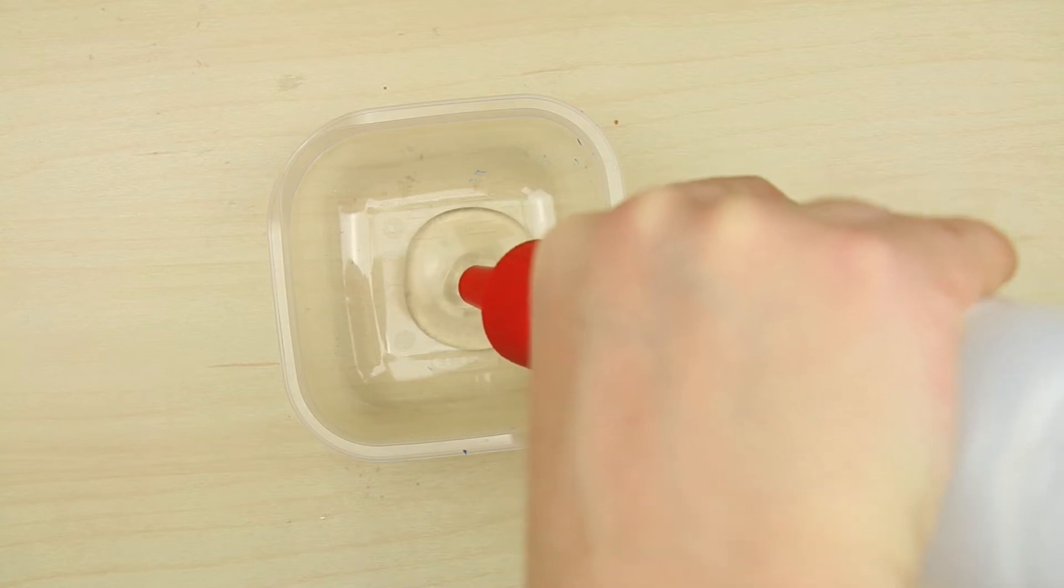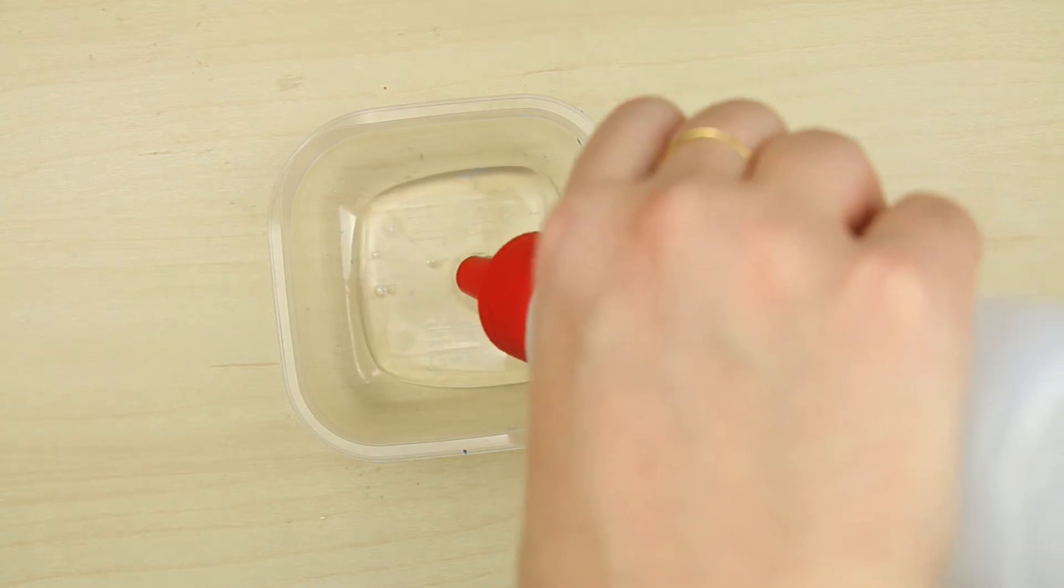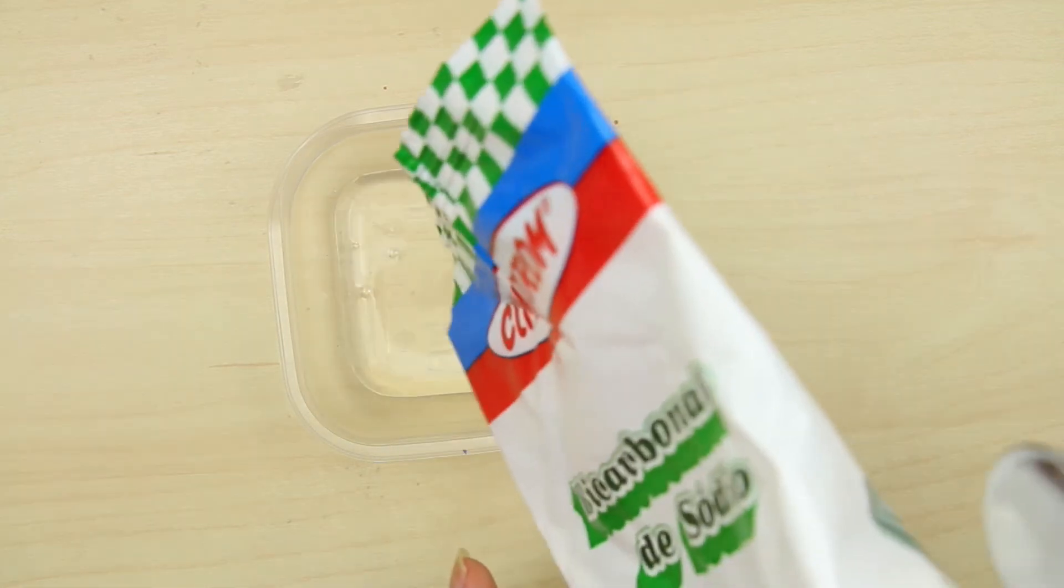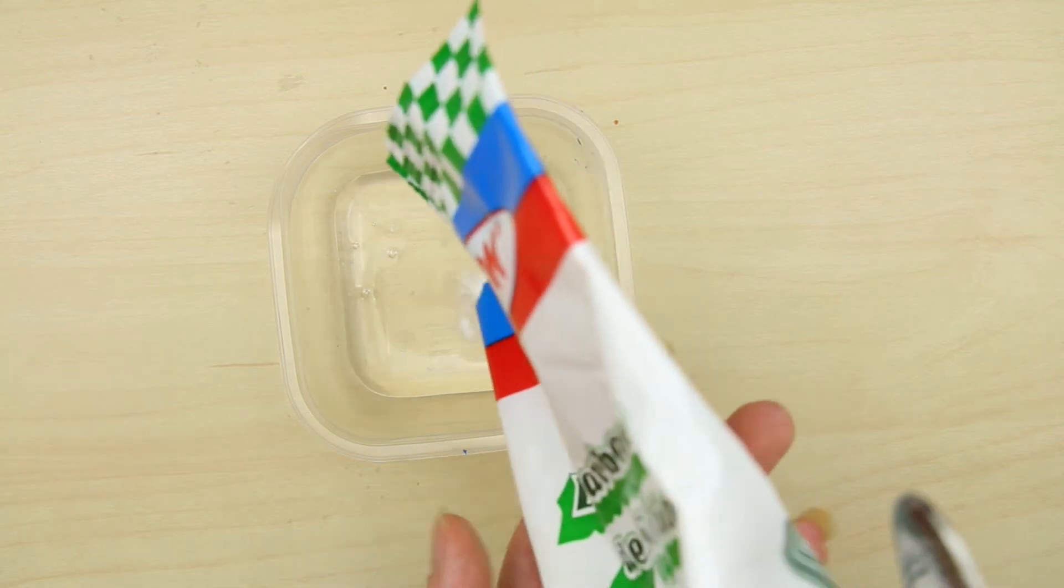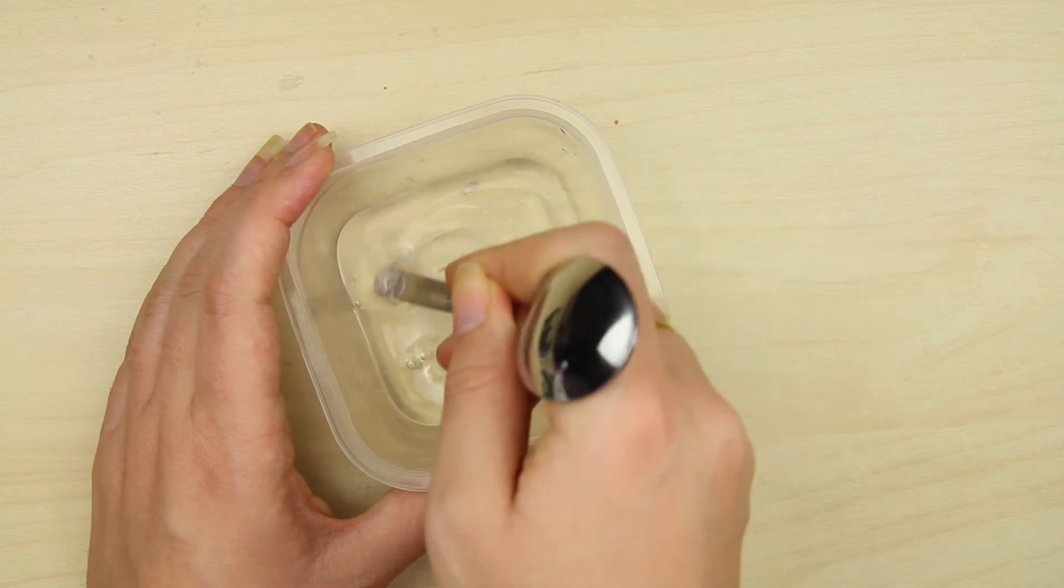First of all, we need to create the anti-stress squishy yolk part. For that I created some slime by mixing glue with a little bit of baking soda. Up until now, all the glues that I've used always worked and they were never any expensive brand, just some off-brand ones.